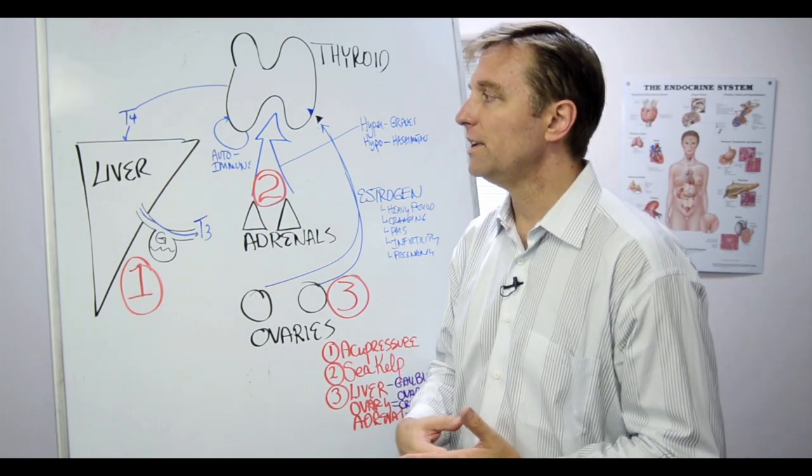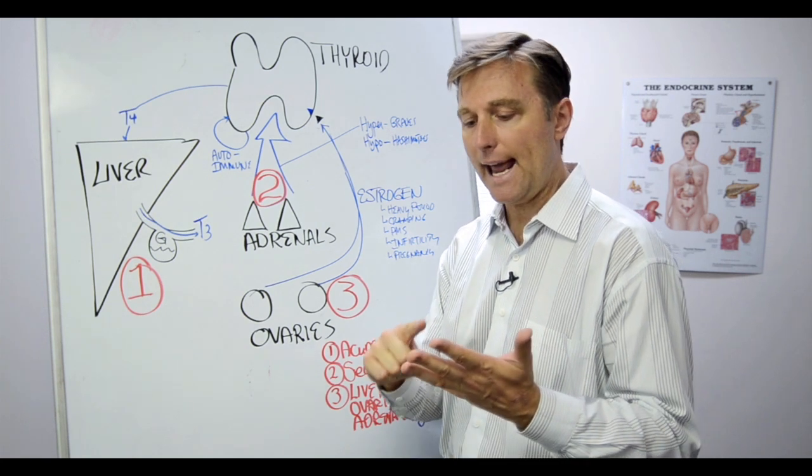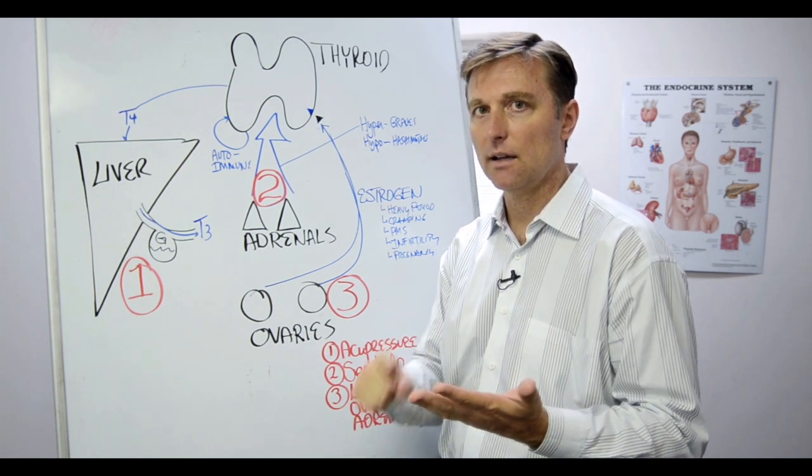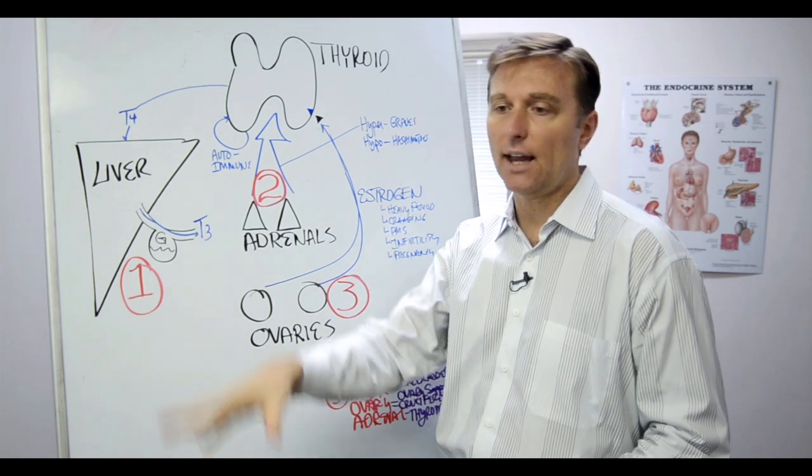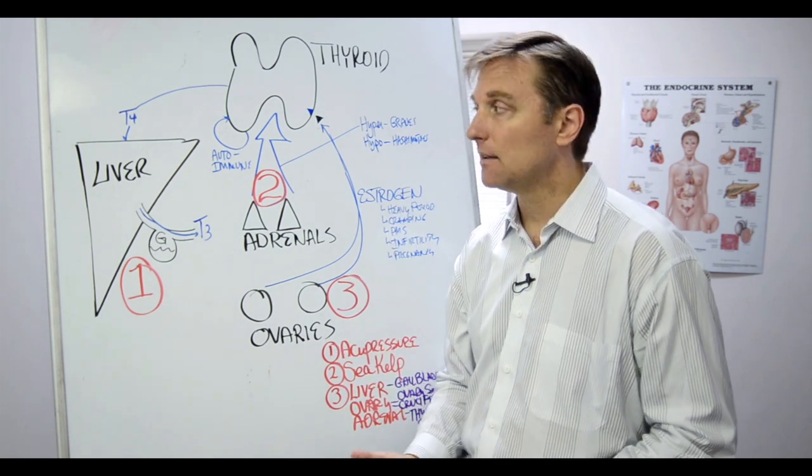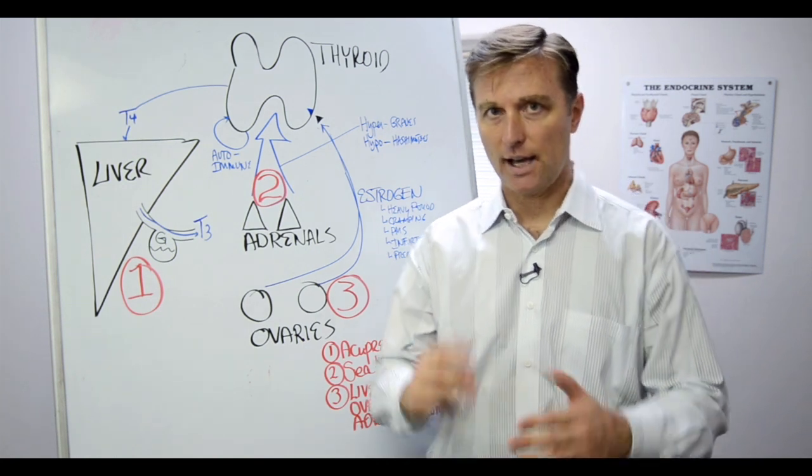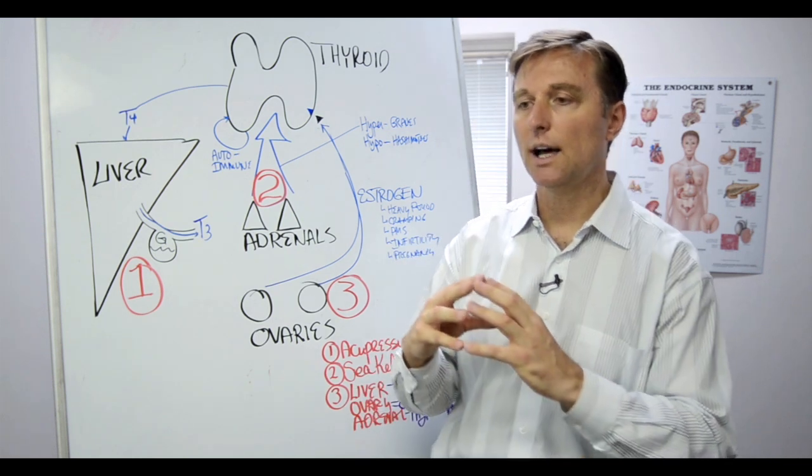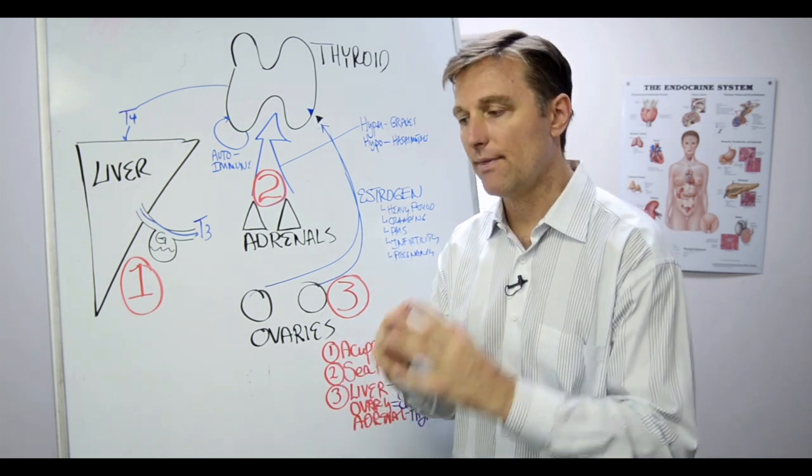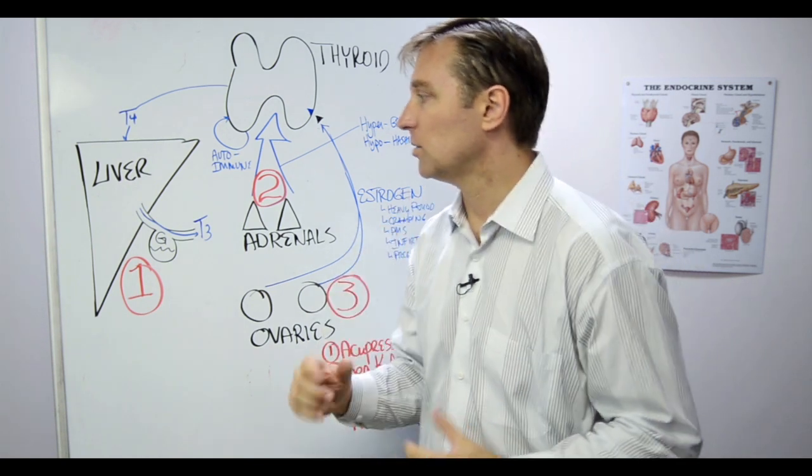So what you want to do if you have thyroid symptoms, which are hair loss, dry hair, slow metabolism, loss of eyebrows, weight gain all over the place, and abnormal thyroid hormones on blood tests, then you're going to look at three different areas for the root cause. You're going to work on whatever shows up on that, and then recheck your thyroid, and you're going to find your thyroid will start to come back.